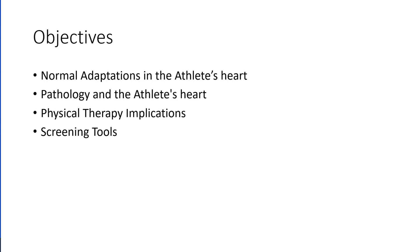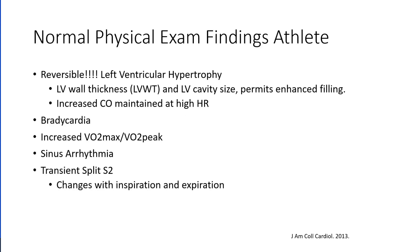In this lecture, we're going to talk about normal adaptations in the athlete's heart, get into some pathology, physical therapy implications, and a brief discussion on screening. A normal finding in an athlete is left ventricular hypertrophy, but it's reversible. Remembering back from our discussion on cardiomyopathies, those are not reversible changes — they are fixed changes due to a disease process, either a congenital issue or something like hypertensive heart disease.